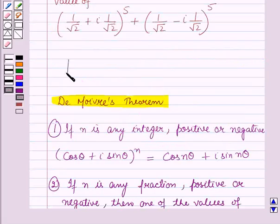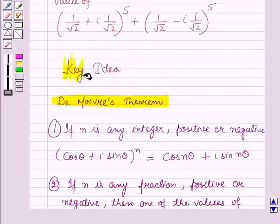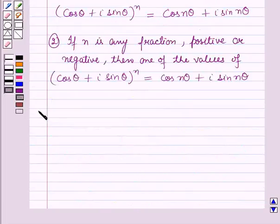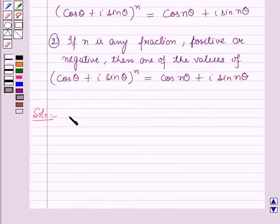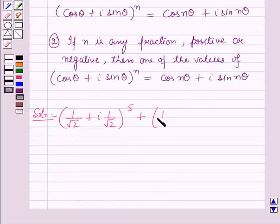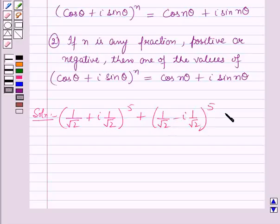This result will work as a key idea for solving this question. Now we start with the solution. Using De Moivre's theorem we have to find the value of (1/√2 + i·(1/√2))^5 + (1/√2 − i·(1/√2))^5.